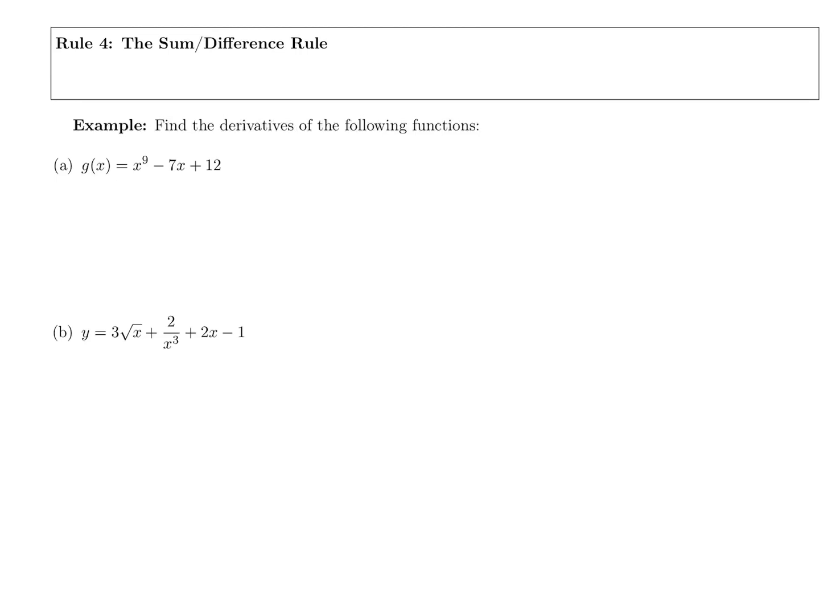Here we have the sum and difference rule. This is another do-nothing rule — it doesn't impact how you take the derivative. It just says if you have two terms added or subtracted, make sure you take the derivative of each term and add or subtract them accordingly.